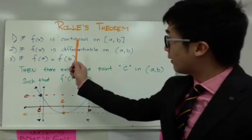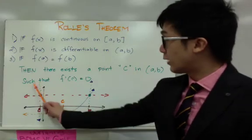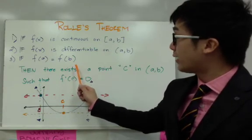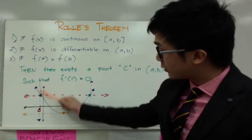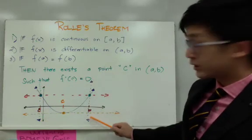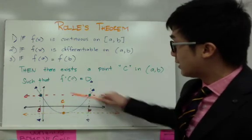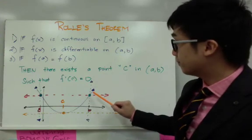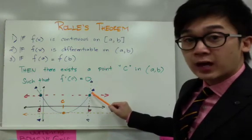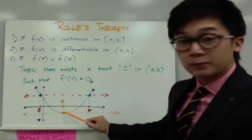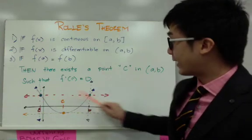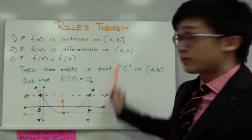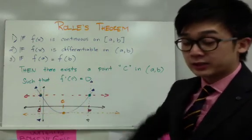To illustrate Rolle's Theorem graphically: if f of a is equal to f of b, the height of a and b is the same. This is the first interval a, and this is the second interval b. Connecting these two points gives us f of a and f of b at the same height. We can then find a point in this interval parallel to the secant line connecting a and b — this is our point c — and they have the same slope.